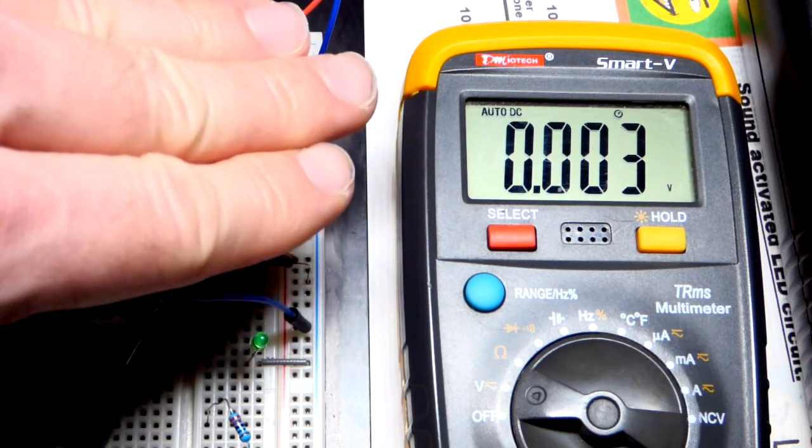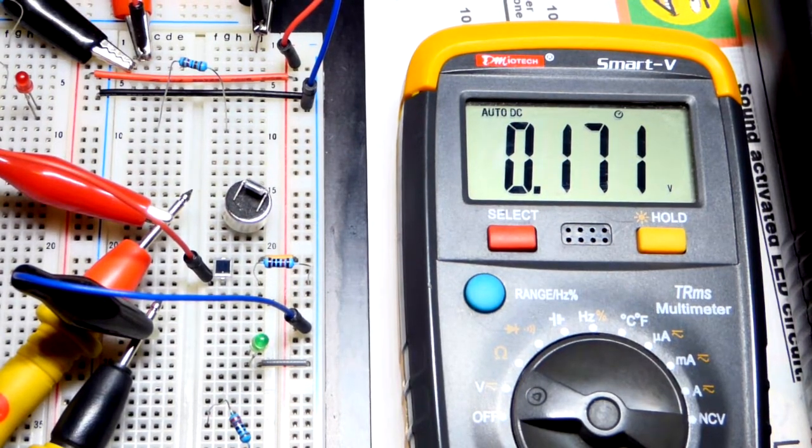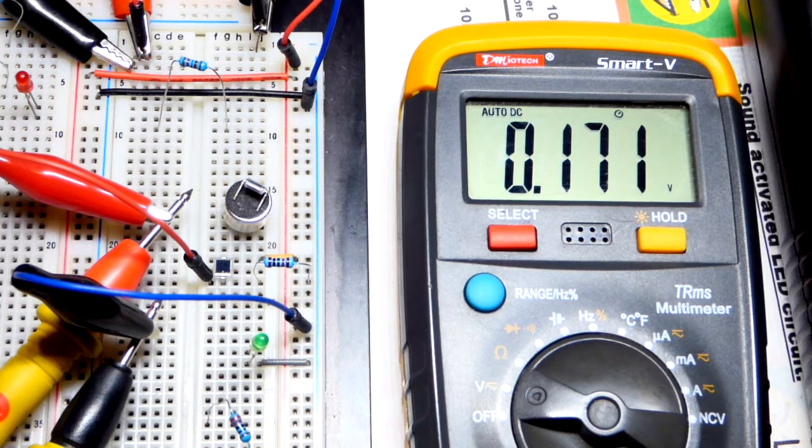So out of that 5 volts it's getting knocked down to practically nothing. And now we have almost 2 tenths of a volt.